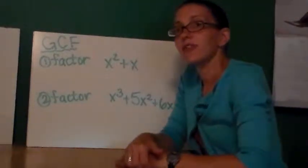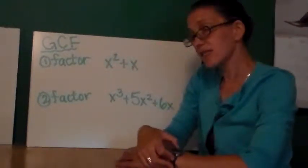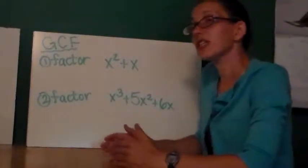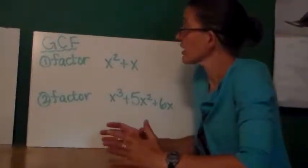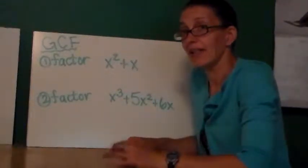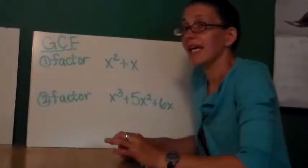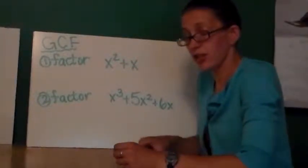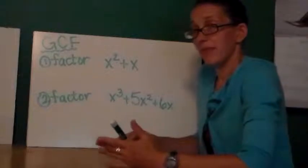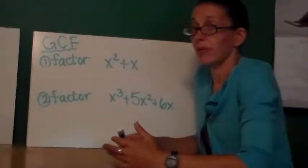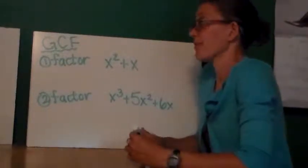GCF stands for the greatest common factor. In this factoring method, I first begin by looking for a greatest common factor, something that I can factor out of each term. Now, it may be a number, it may be a variable. This is always going to be my first step.